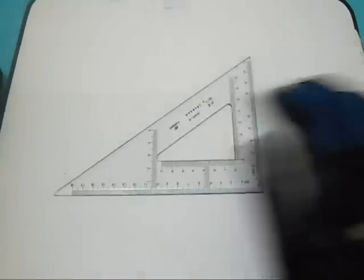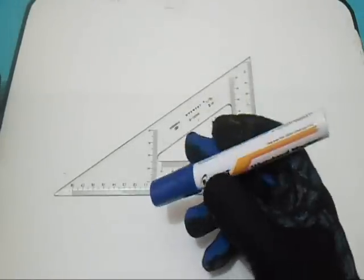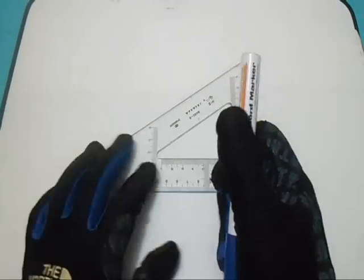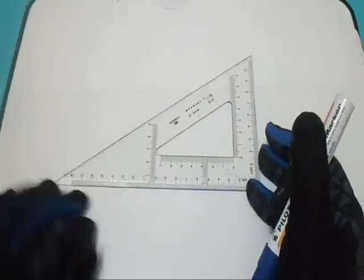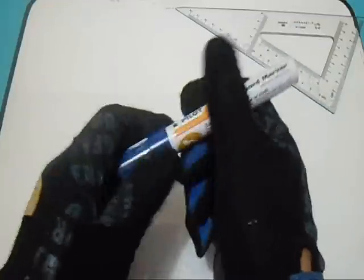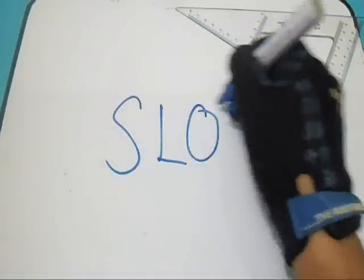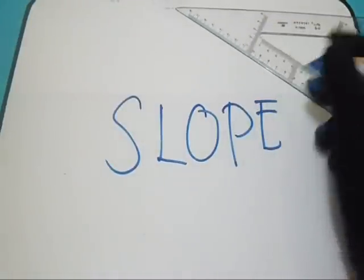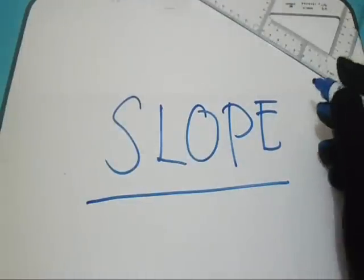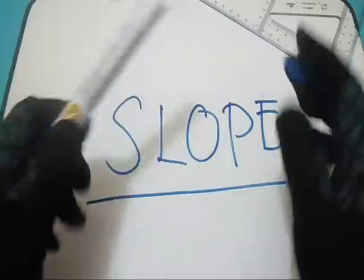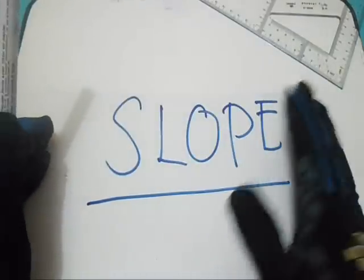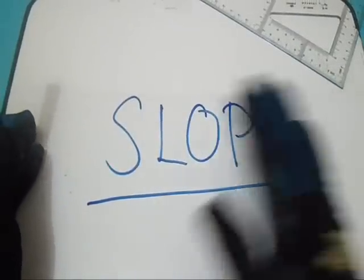I have a triangle here and also a ruler and a whiteboard. So now I want to show you how to compute a slope. You will see this in the isometric drawing.